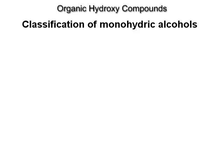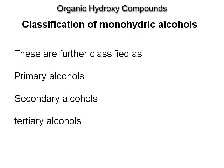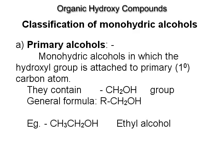Classification of monohydric alcohols. These are further classified as primary, secondary and tertiary alcohols. Primary alcohols are monohydric alcohols in which the hydroxyl group is attached to the primary carbon atom. They contain a CH2OH group; the general formula is R-CH2OH. For example, ethyl alcohol.